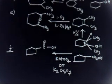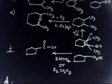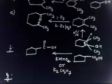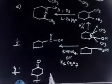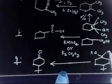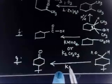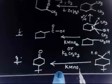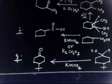For part G, you have to prepare a ketone with a C=O group. You can take a secondary alcohol and use either KMnO₄ or K₂Cr₂O₇ as the oxidizing agent — both reagents can be used to oxidize a secondary alcohol to a ketone.